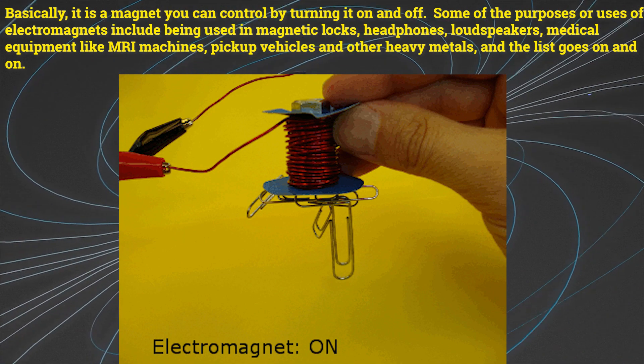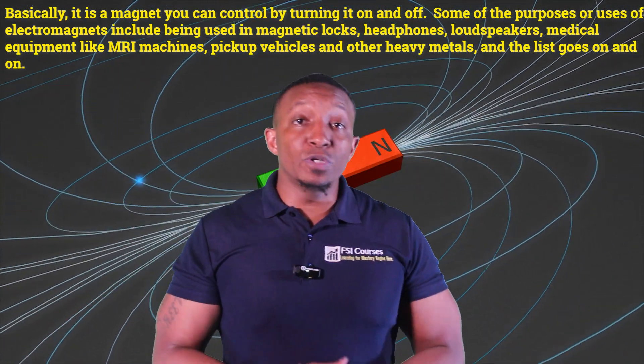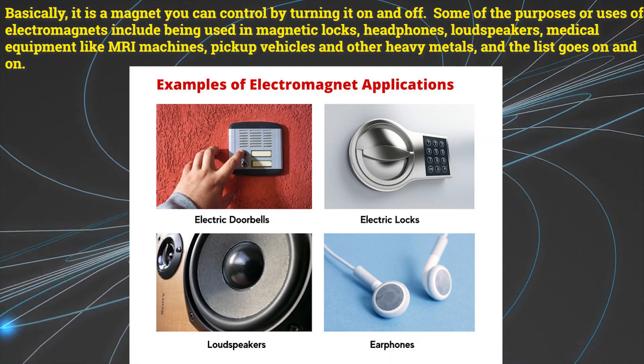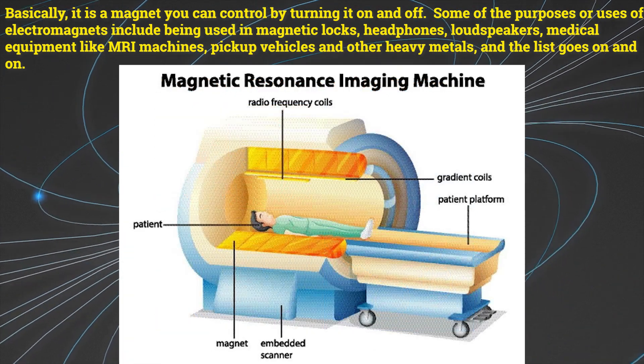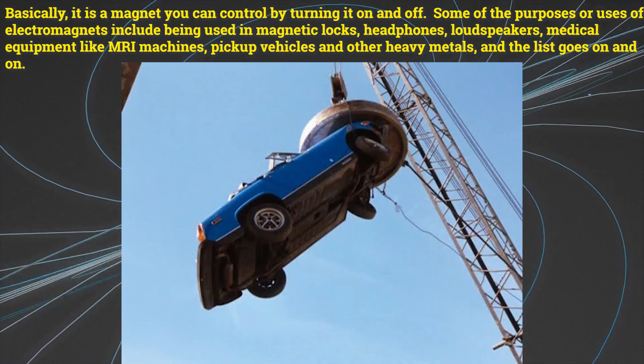Basically, it is a magnet you can control by turning it on and off. Some of the purposes or uses of electromagnets include being used in magnetic locks, headphones, loudspeakers, medical equipment like MRI machines, to pick up vehicles and other heavy metals and the list goes on and on.